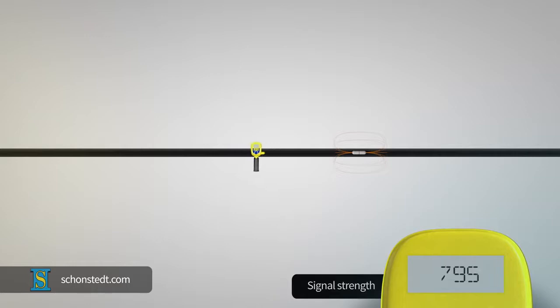Keeping that orientation of the sensor, in other words without rotating the receiver at all, move along that axis to the left and the right to determine in which direction the signal becomes stronger. Then, keep moving in that direction while the signal strength increases.